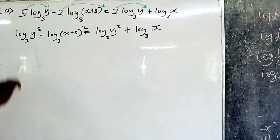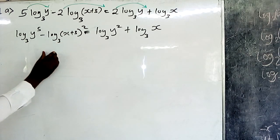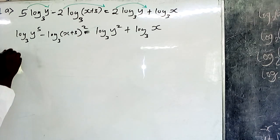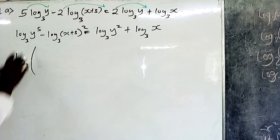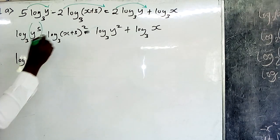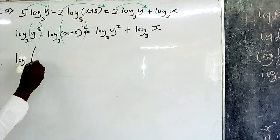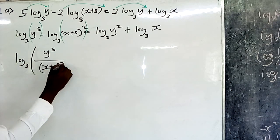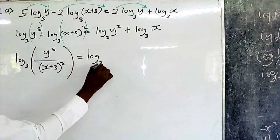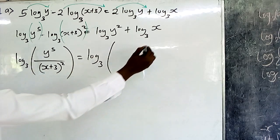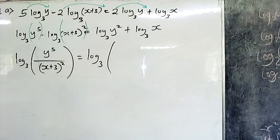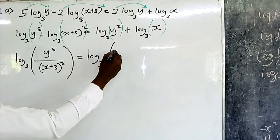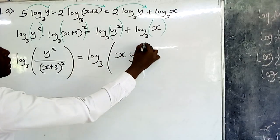After getting rid of the coefficients, the next step is to make sure we have one term on either side of the equation. We factorize log base 3 outside. On the left side, subtraction changes to division, so we have log₃(y⁵ / (x+3)²). On the right side, factorizing log base 3 outside means addition changes to multiplication, so we get log₃(y² · x), which is log₃(xy²).